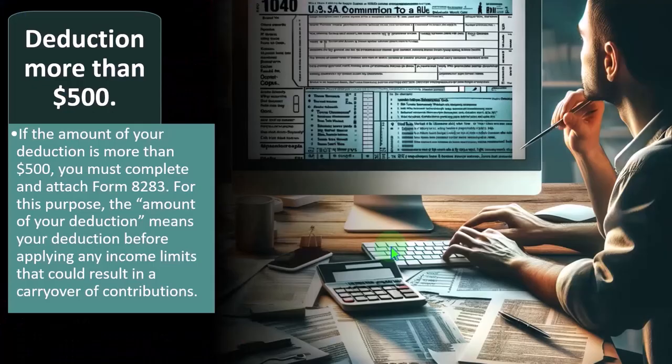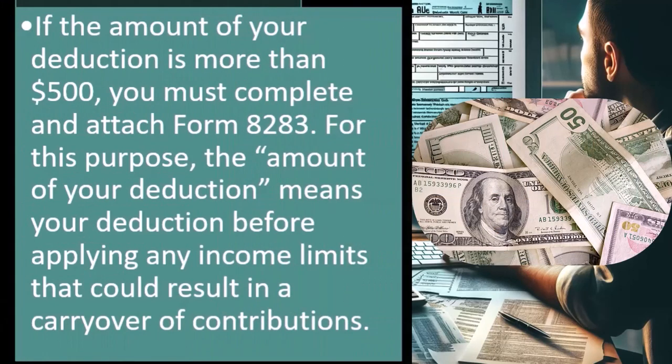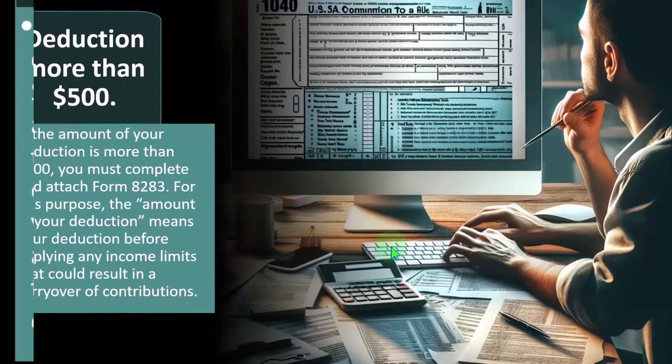If the amount of your deduction is more than $500, you must complete and attach Form 8283. You need more detail because you're over the dollar limit when giving clothes and similar items. For this purpose, the "amount of your deduction" means your deduction before applying any income limits that could result in a carryover of contributions.